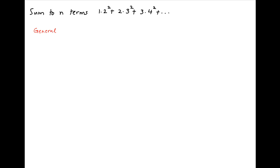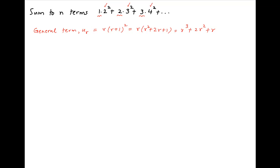The general term or the r-th term of the given series, denoted by u_r, is the product of two components. The first component is the r-th term of the series 1, 2, 3 and so on, that is r. The second component is the r-th term of the series 2 square, 3 square, 4 square and so on, that is (r+1) whole square. Therefore u_r is equal to r times (r+1) whole square, which is equal to r³ + 2r² + r.